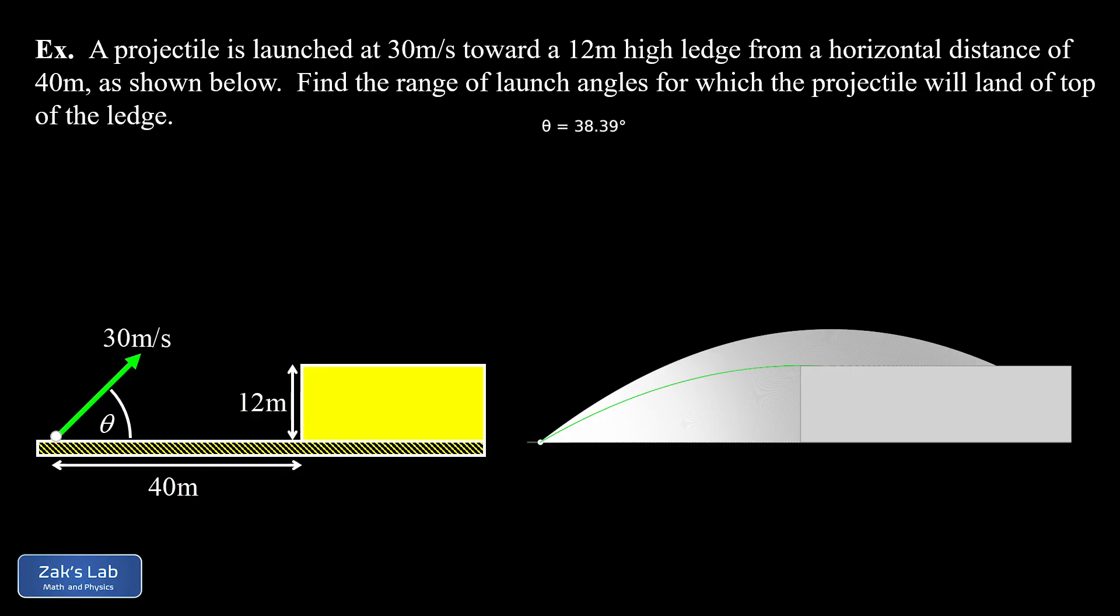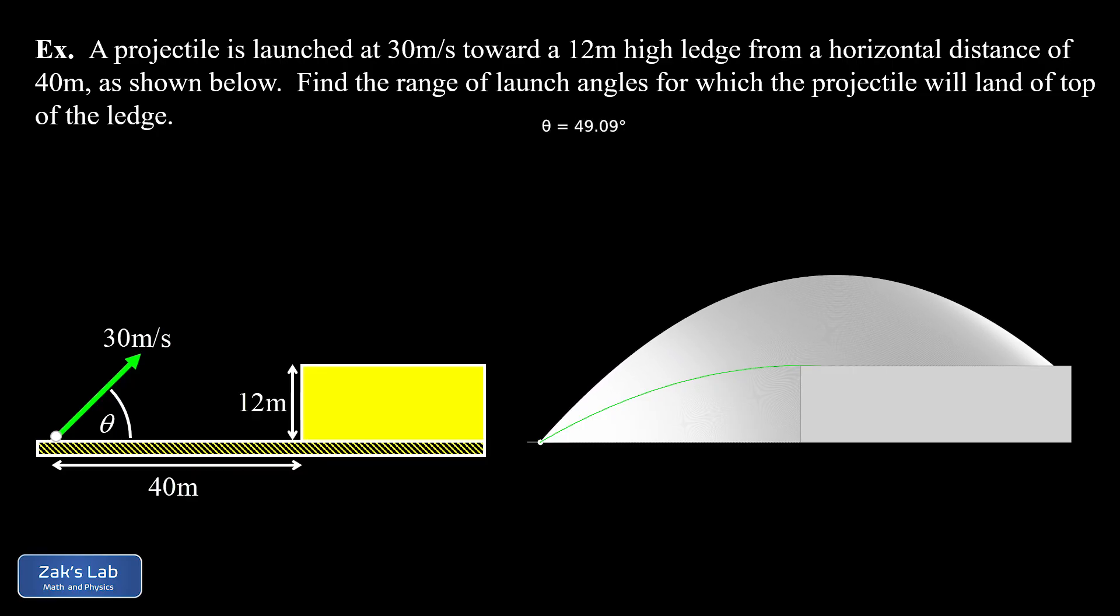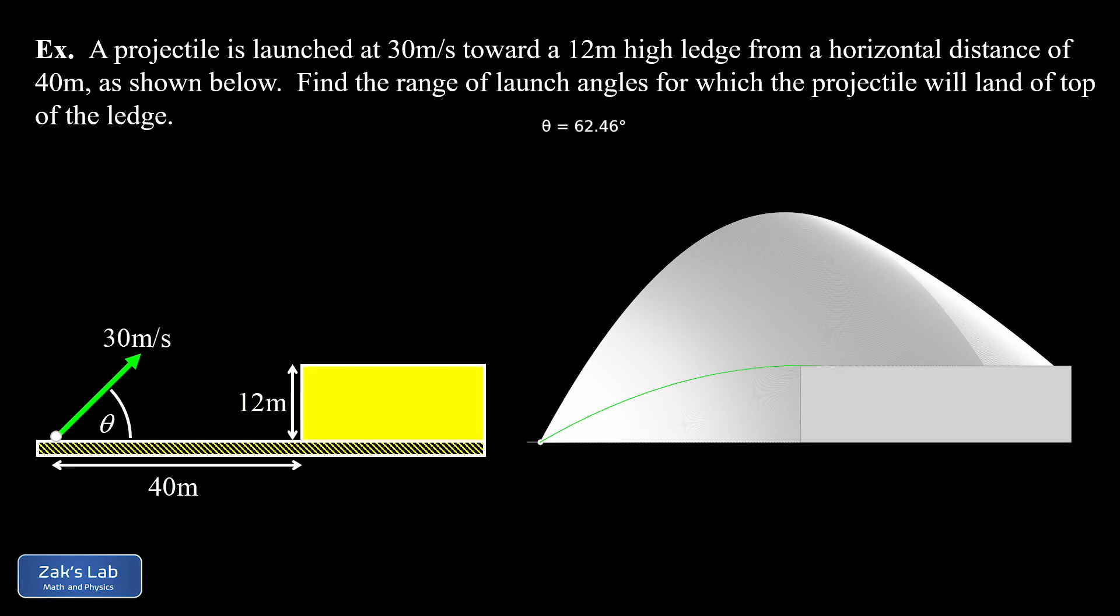Now we see what's going to go wrong if we get to angles that are too steep. Our landing points are starting to sweep back to the left and eventually we get back to that same special point, the upper left corner of the ledge.